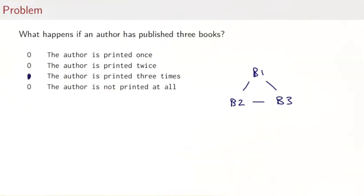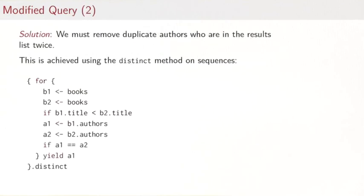What can we do about this? How can we avoid printing the author several times? One solution would be to remove duplicate authors who are in the result list twice or several times. There's a function for this called 'distinct'—it works on all sequences and will simply remove duplicate elements from the sequence, keep the first one, remove the other ones. One thing we could do is take the query we've seen here, put it in braces or parentheses, and call distinct on the result set. That would do the trick. On the other hand,